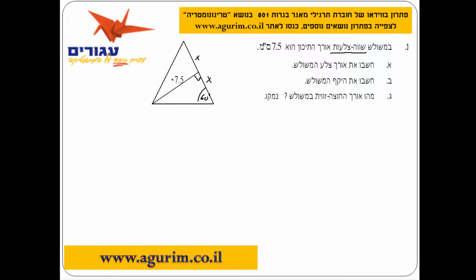בואו נעשה את זה. יש לנו פה ניצב מול זווית וניצב ליד זווית, לכן אנחנו נשתמש בטנגנס. נכתוב: 7.5 הוא הניצב מול הזווית, חלקי הניצב ליד שווה טנגנס הזווית. כלומר x שווה 7.5 לחלק ב-טנגנס 60.